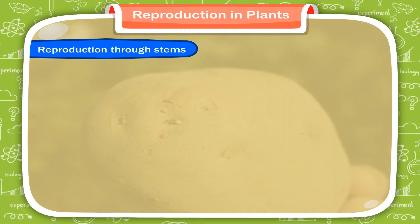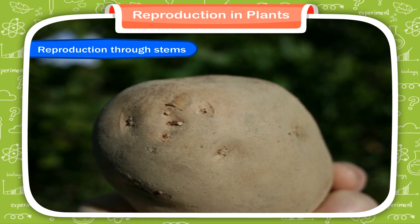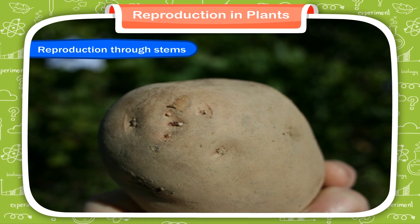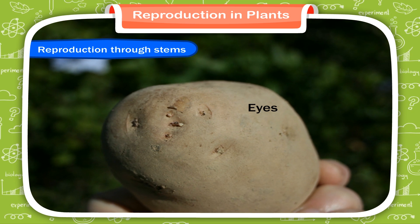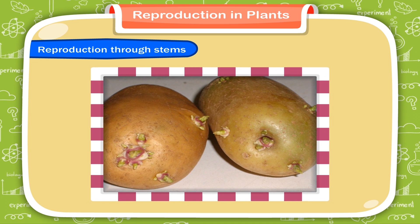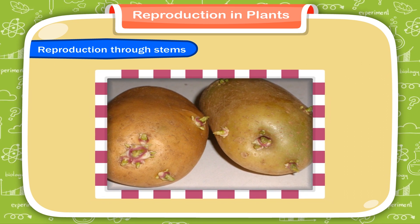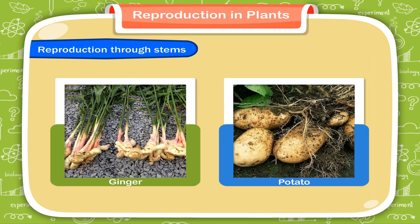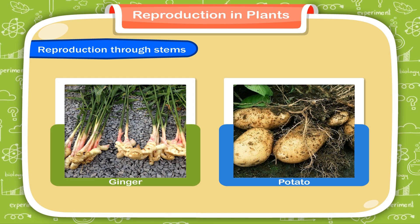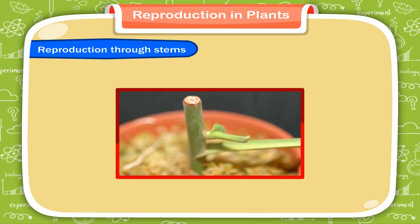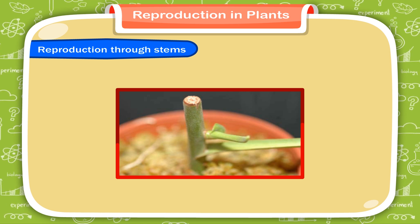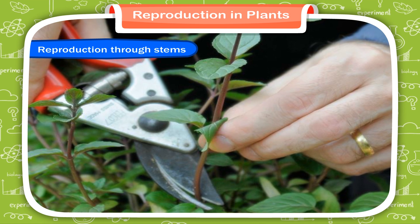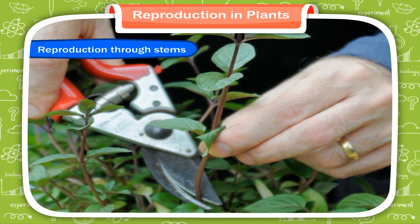Reproduction through stems. Have you observed a potato carefully? It has some small black dots on it called eyes. When an eye, also called a bud, is planted, it grows into a new plant. Several plants like ginger and potato are actually underground stems. These stems store food in them and grow into new plants through their buds. Each bud grows as a new plant. Some new plants can also grow from pieces of the stem because they have buds on them. These pieces of stem are called stem cuttings.